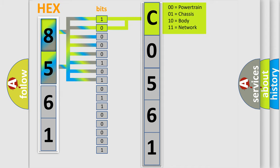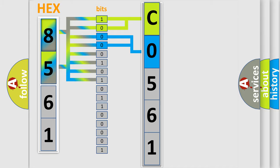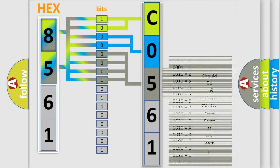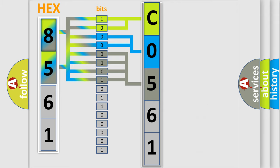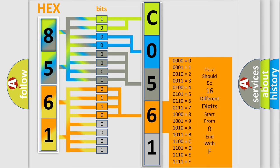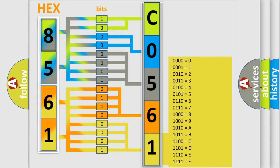By combining the first two bits, the basic character of the error code is expressed. The next two bits determine the second character. The last bit styles of the first byte define the third character of the code. The second byte is composed of eight bits — the first four bits determine the fourth character, and the last four bits define the fifth character. A single byte conceals 256 possible combinations.